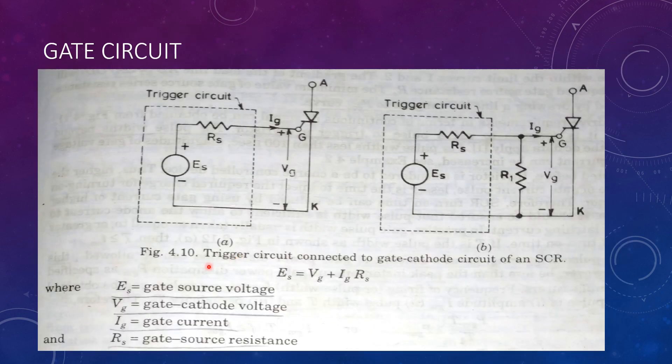Figure shows the trigger circuit connected across gate and cathode of an SCR. ES is the gate to source voltage.